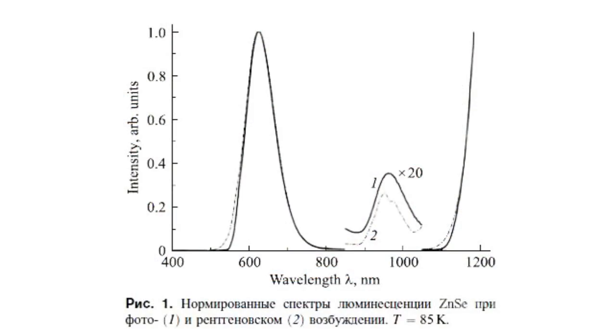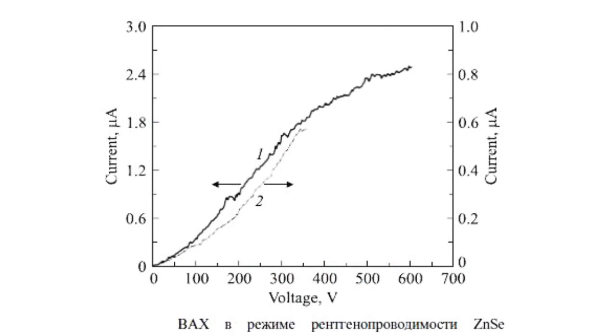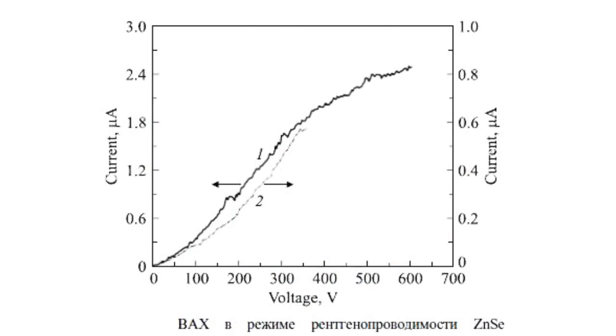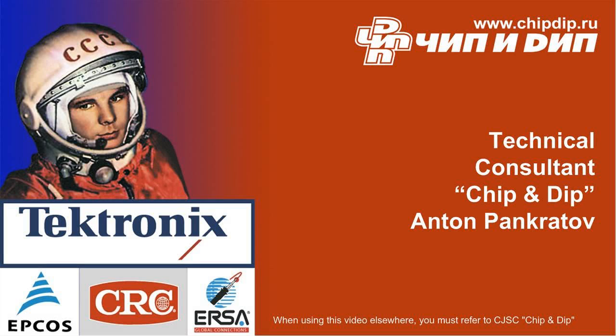Besides, zinc selenite has secondary fluorescence properties. Thus, it is a promising material for making luminophores. For X-ray radiation, zinc selenite is a luminophore with a long afterglow period. All these properties make zinc selenite one of the most promising materials for building shortwave semiconductor electronic devices.